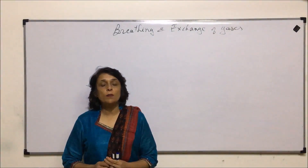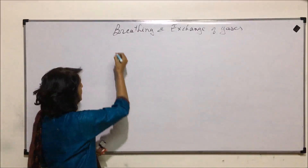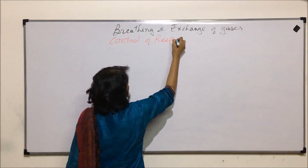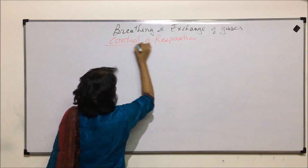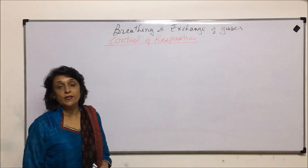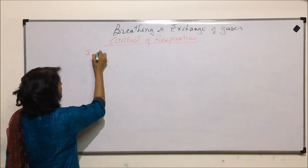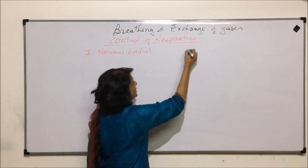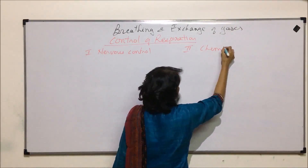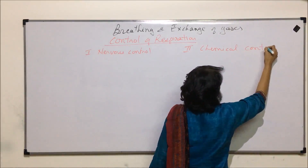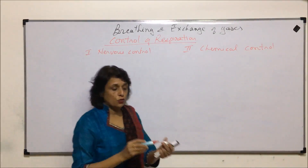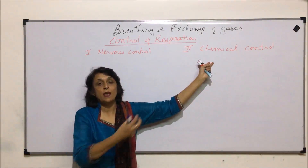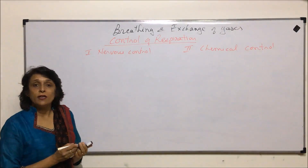In this part we will talk about control of respiration. Respiration is controlled in two ways: one is nervous control, and the second mechanism is chemical control. Nervous control, as the name tells us, is associated with the nervous system, and chemical control is due to some chemicals that we will see in a minute.